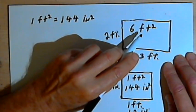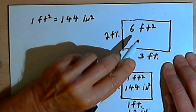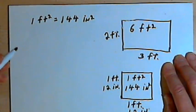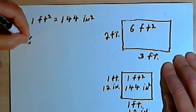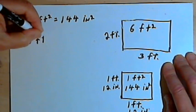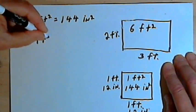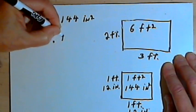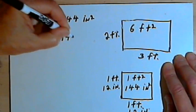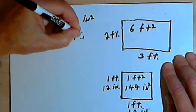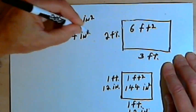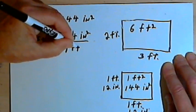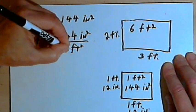I've got 6 square feet and I want to convert that into square inches. Here's what I'm going to do: I'll take the 6 square feet and multiply it by the fraction 144 square inches over 1 square foot.